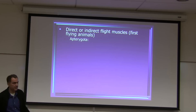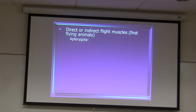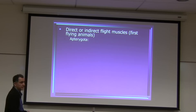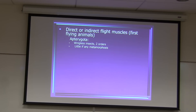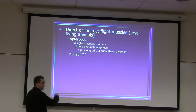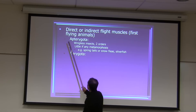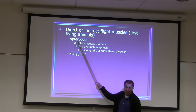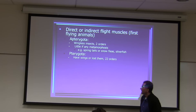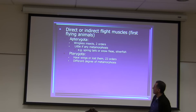Apterygota means wingless — these are insects without wings and with little or no metamorphosis. Examples include springtails, snow fleas, and silverfish. Pterygota are the winged insects with 22 orders and different degrees of metamorphosis. Note: the 'P' in Pterygota is not pronounced, but in Apterygota it is.